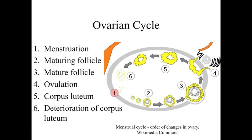The corpus luteum is a temporary endocrine organ present for a relatively short period of time. If fertilization and implantation do not occur, the corpus luteum breaks down and the whole cycle repeats. We'll have menstruation — loss of the uterine lining — and then trigger the start of maturation of a new set of follicles, so the ovarian cycle continues.